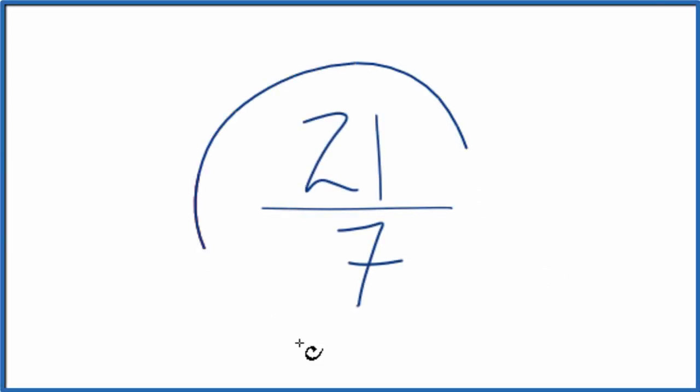Let's simplify the fraction 21 sevenths, and here's how we do it. We're trying to find another fraction that's equivalent. It has the same value as 21 over 7, it's just that we've reduced or simplified it down to its lowest terms.